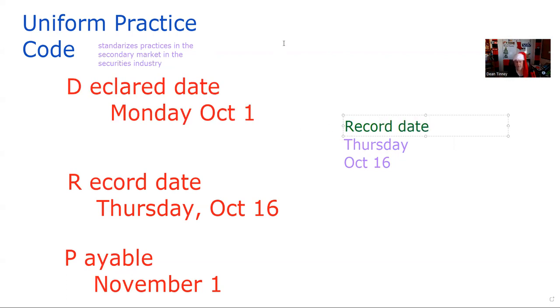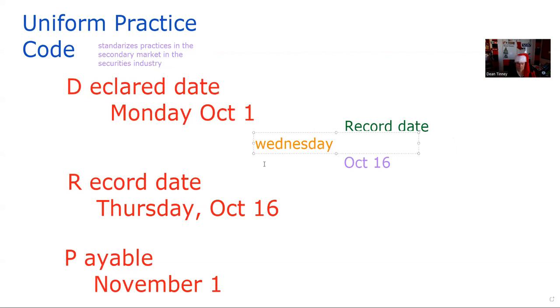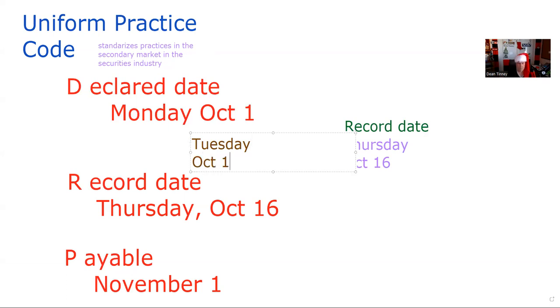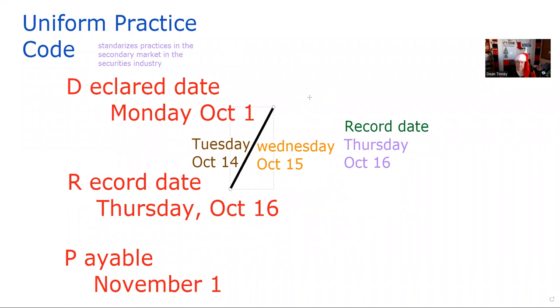If we buy this stock on Wednesday, October 15th, you would not be on the shareholder list in time, because it takes two days — T plus one, you wouldn't be there. But if you buy on Tuesday, October 14th — T plus one, T plus two — you would be there in time and you do get the dividend. So Tuesday would be the last day you could buy that stock and still receive that dividend.